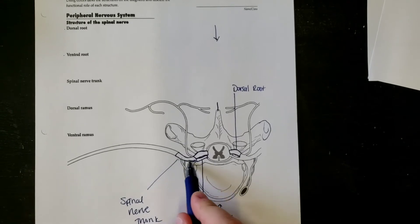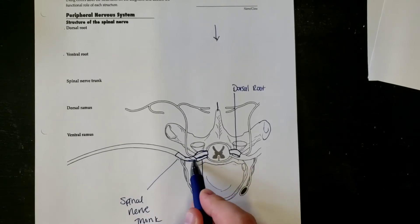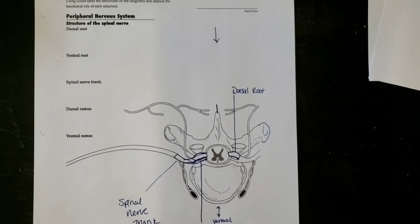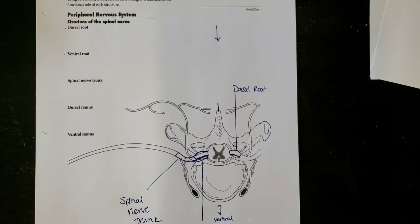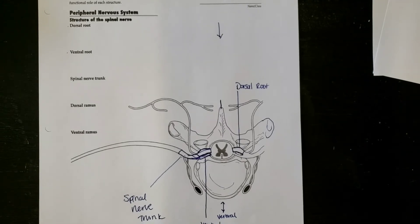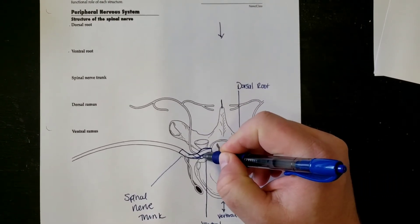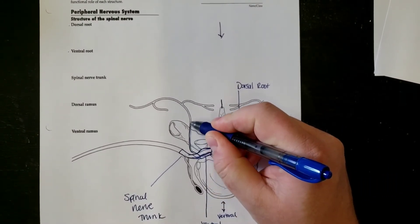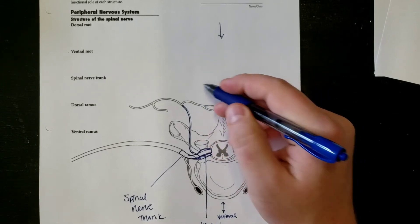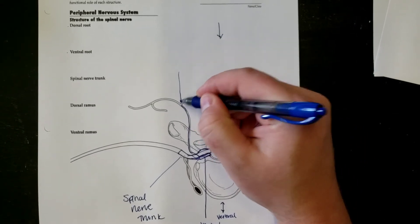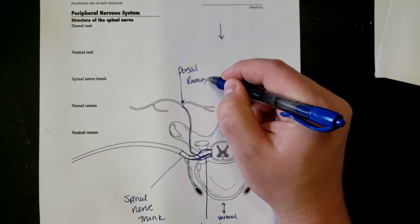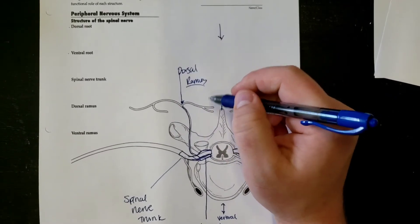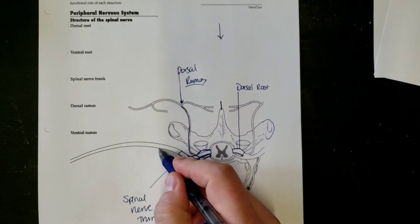At this point your nerves are going to separate, whether it's going to be sensory or motor information, separating into your dorsal or your ventral root. And then basically you have nerves traveling to the dorsal side of your body, which would be the dorsal ramus. Ramus just means arm. And then you have the ventral ramus.